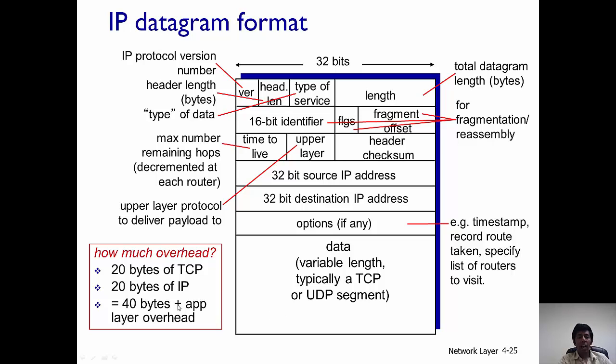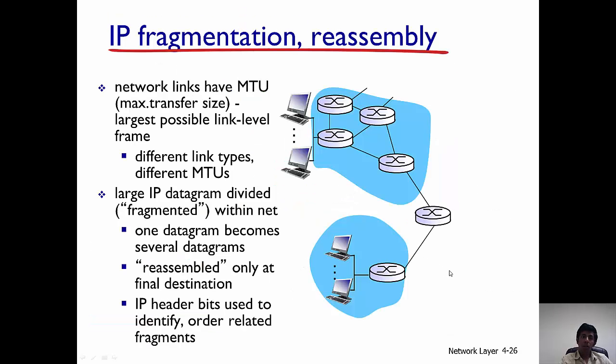There are 20 bytes for TCP and 20 bytes for IP, so roughly 40 bytes plus there is the application layer overhead. So roughly I would say somewhere between 40 to 60 bytes is the overhead for sending an IP datagram packet.